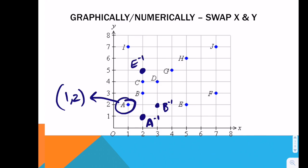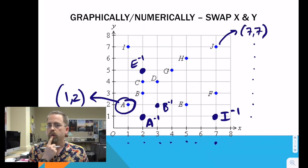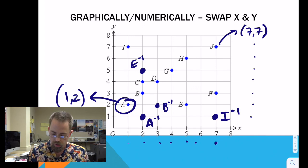Right next to it there, I see i is at 1, 7. So, at 7, 1, I will have the inverse of i. And then where is j? It is 1, 2, 3, 4, 5, 6, 7 over and 1, 2, 3, 4, 5, 6, 7 up. 7, 7. Where is the inverse of that going to be? It's right there at the exact same spot. It didn't move.